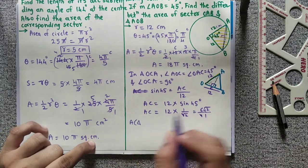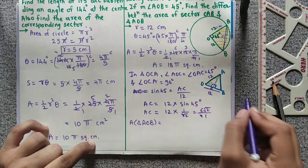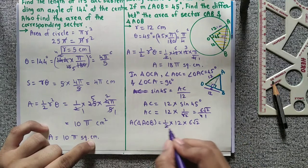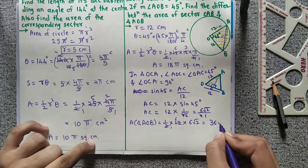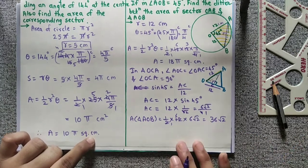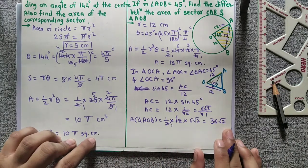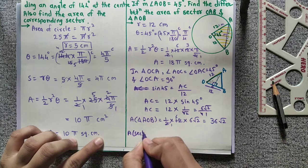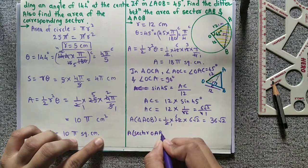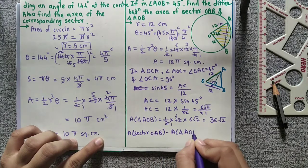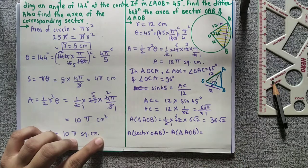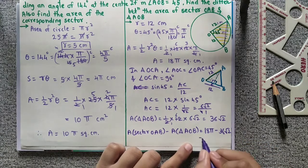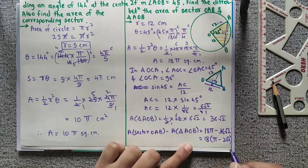Now area of triangle AOB: base is OB which is 12, and height AC is 6 root 2, divided by 2. Two ones are 2, two sixes are 12. So area of triangle AOB equals 36 root 2. Now subtracting: area of sector OAB minus area of triangle AOB equals 18 pi minus 36 root 2. Taking 18 as common: 18 times open bracket pi minus 2 root 2 close bracket square centimeters. That is the answer.